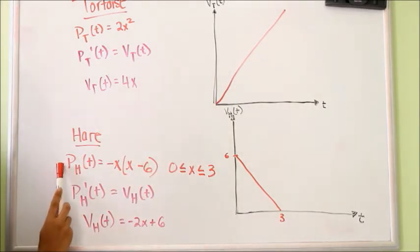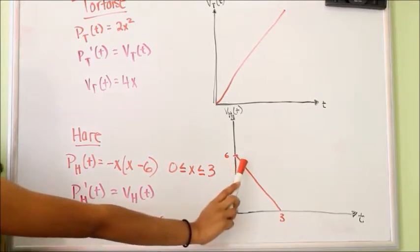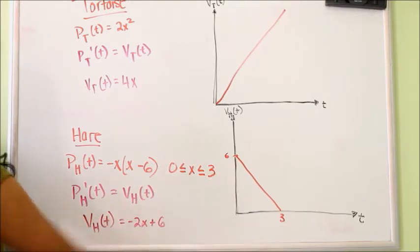For the hare, its position function, when derived, gives the velocity function, which is -2x + 6. And so over the course of the race, the hare's velocity decreases.